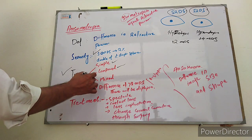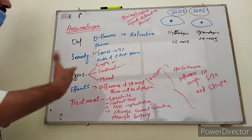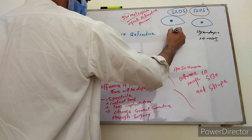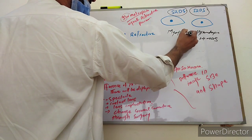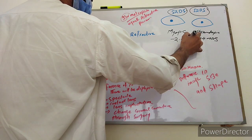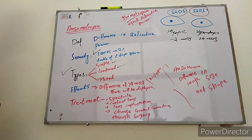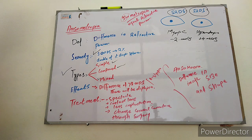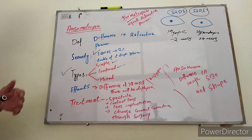Similarly, both eyes are myopic but with a difference — one eye has minus two diopter sphere, the other has minus four diopter sphere. This is also called compound anisometropia. The third type is mixed anisometropia — one eye is hypermetropic and the other eye is myopic. This is a strange condition; once an optician sent a patient back to me saying it was not possible for one eye to have plus power and the other negative power. I explained it to the patient because he was educated.